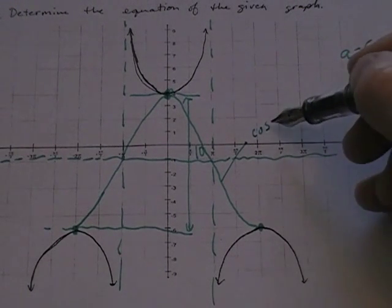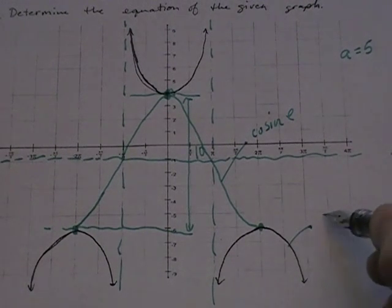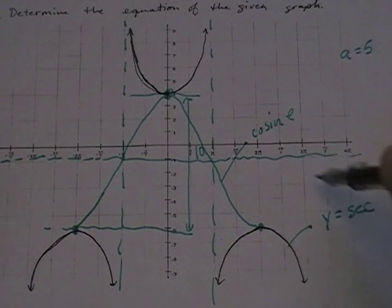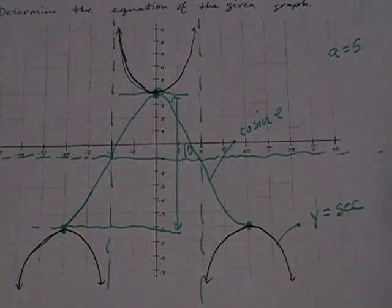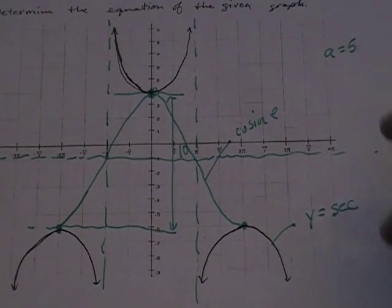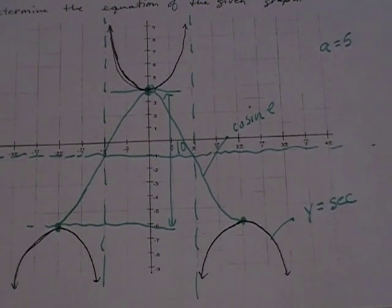So the answer to this guy is going to be a secant graph, because secant and cosine are reciprocals. So if I can write the equation to this cosine, the a, the b, the c, and the d terms, the horizontal and vertical stretches and the horizontal and vertical shifts are going to be identical to the secant term.